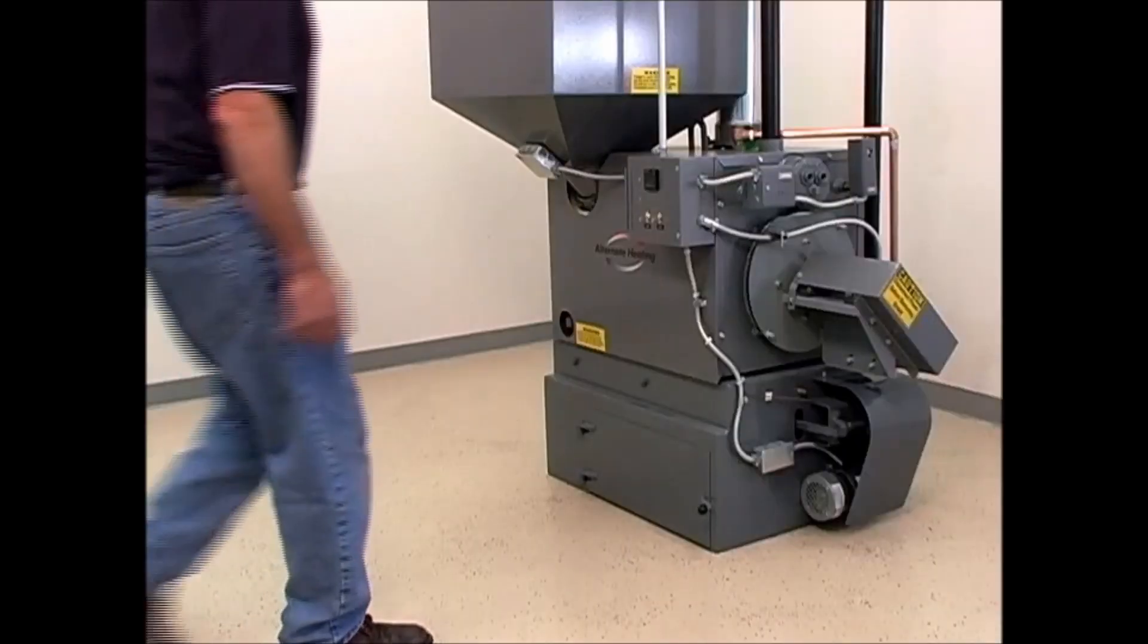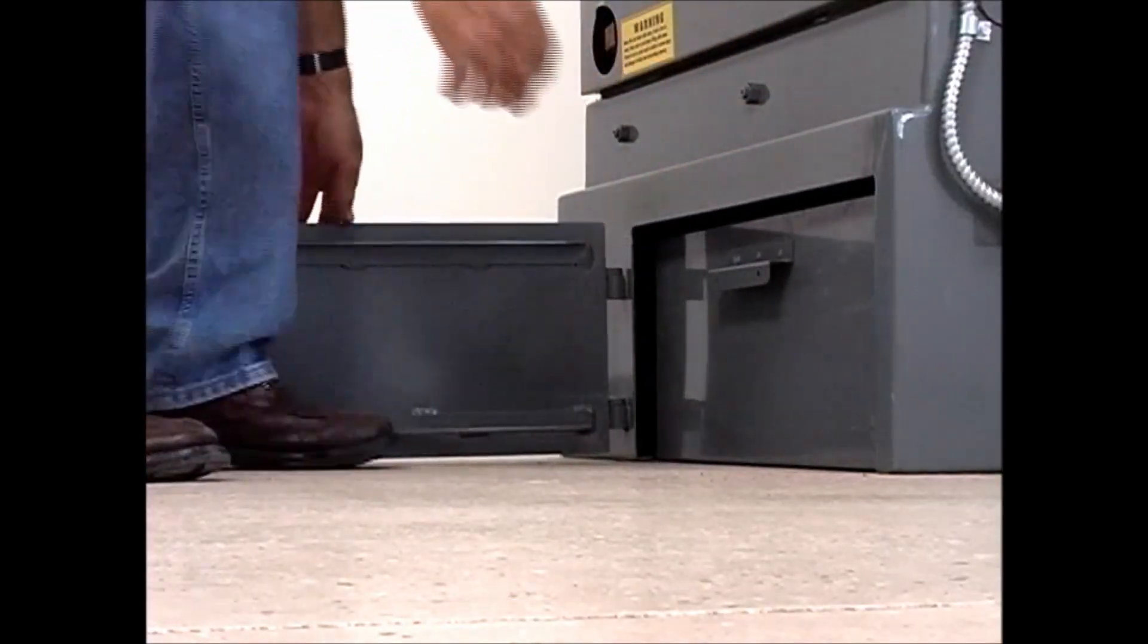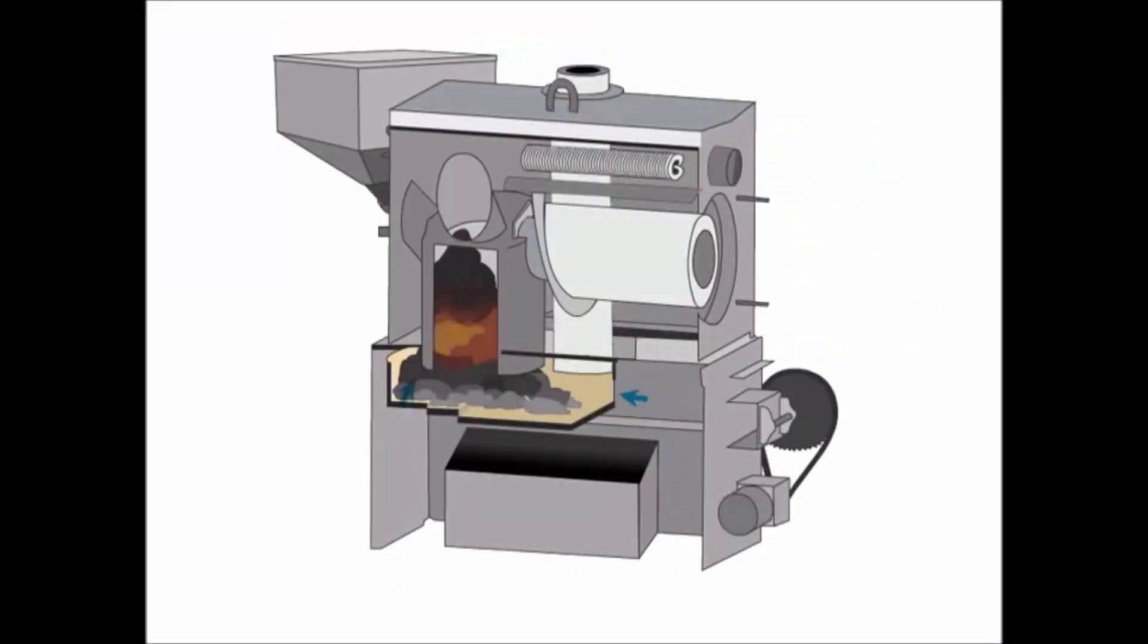The ash pan is located at the bottom of the unit where it is easily accessible from the door on either side of the boiler. Many other stokers on the market use timer-based regulation.